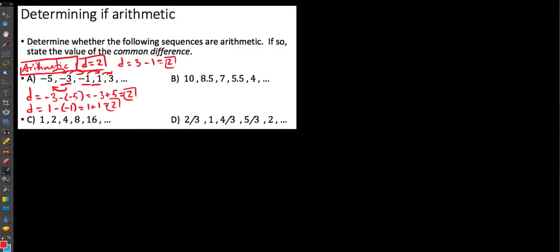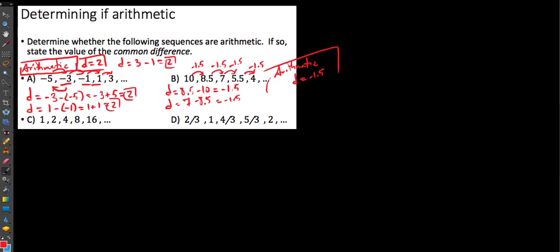Looking at sequence B, we have to show our work. We find 8.5 minus 10 equals negative 1.5, so it went down by 1.5 units. Then 7 minus 8.5 equals negative 1.5. And 5.5 minus 7 equals negative 1.5. And 4 minus 5.5 equals negative 1.5. Worth noting: this sequence is arithmetic because it has a common difference of negative 1.5, going down by 1.5 units every time.